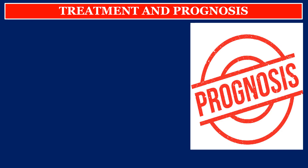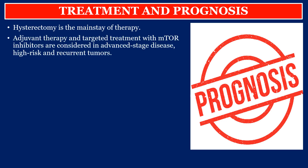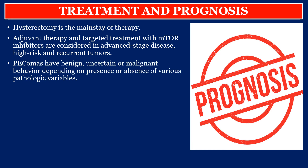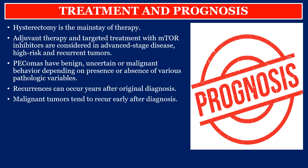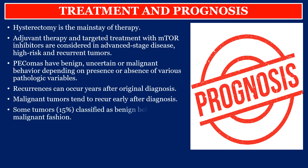Treatment and prognosis. Hysterectomy is the main stage of therapy. Adjuvant therapy and targeted treatment with mTOR inhibitors are considered in advanced stage disease, high-risk, and recurrent tumors. PEComas have benign, uncertain, or malignant behavior depending on presence or absence of various pathologic variables. Recurrences can occur years after original diagnosis. Malignant tumors tend to recur early. Some tumors — approximately 15% classified as benign — may behave in a malignant fashion.